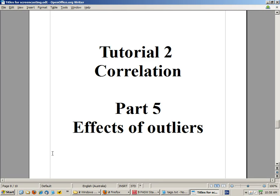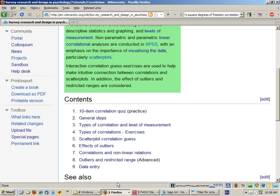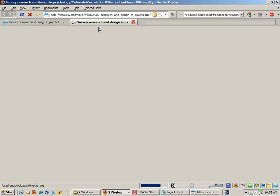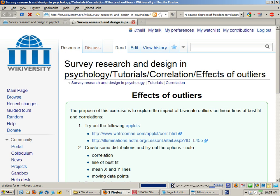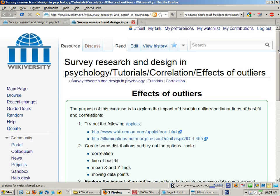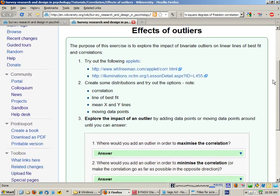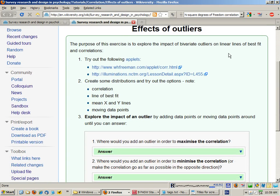Hello, in this part of the correlation tutorial we're going to look at the effects of outliers. I'm on the tutorial notes, click on effects of outliers. The purpose here is to explore and understand how bivariate outliers are going to affect our linear lines of best fit and our estimates of correlations.